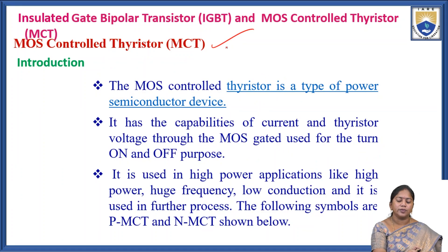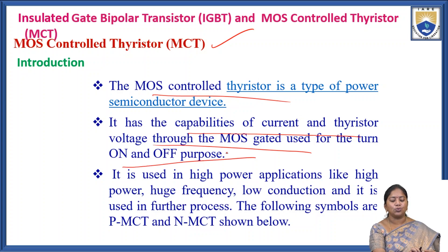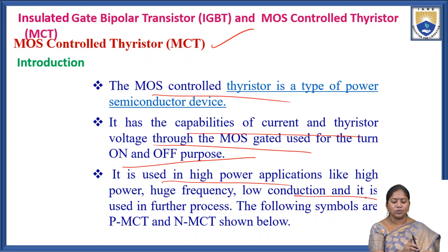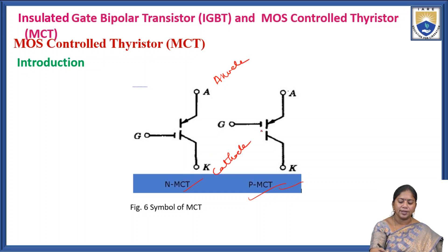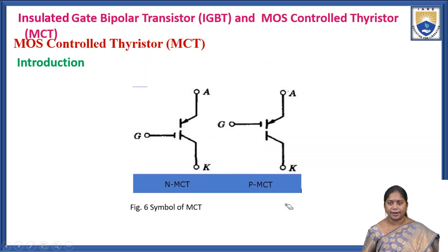The second topic is the MOS Controlled Thyristor, commonly known as the MCT. It is a power semiconductor device with the current and voltage capability controlled through the MOS gate used for turn-on and turn-off purposes. It is used in high-power, high-frequency, low-conduction-loss applications. The symbols for N-type MCT and P-type MCT each have three terminals: anode, cathode, and gate.